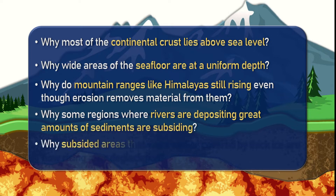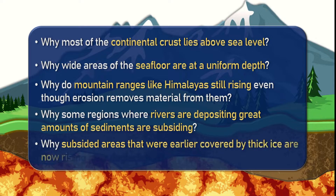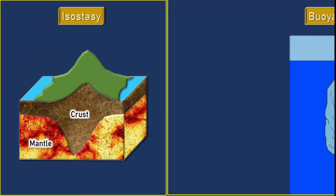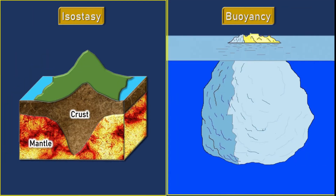Why are some areas, earlier covered by thick ice, now rising after deglaciation? To answer these questions, we must review the concept of isostasy and Archimedes' principle of buoyancy, which explains why and how an object floats and sinks.